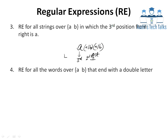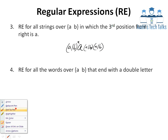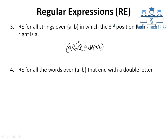Before the A at the third-from-right position, there can be nothing, or any combination of A's and B's. So the regular expression is (A|B)* A (A|B) (A|B), where the last symbol is first from the right, the middle (A|B) is second from the right, and A is the third from the right position. Before that, there can be any number of A's or B's.